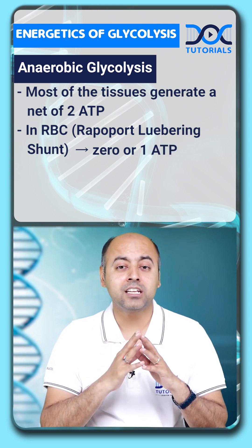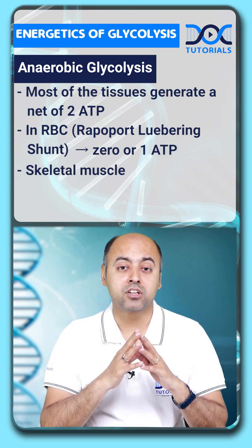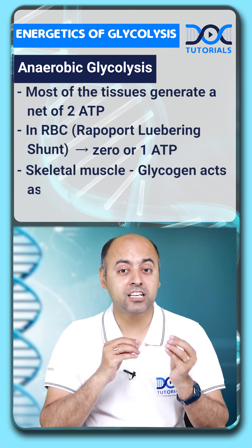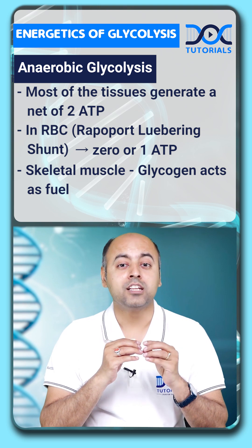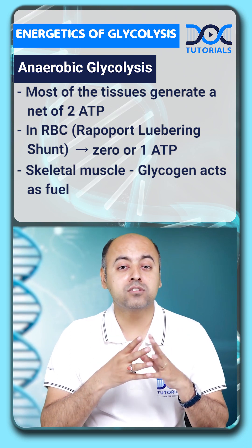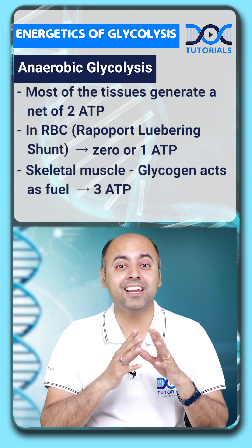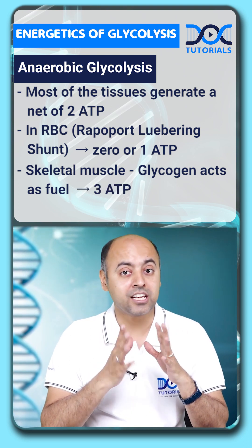On the other hand, in the skeletal muscle, where glycogen is acting as the fuel, the anaerobic glycolysis can produce 3 ATP as the net gain.